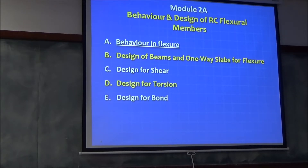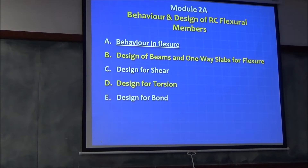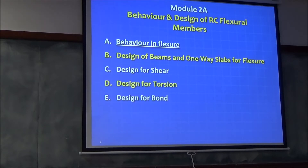Two-way slabs we won't have time to cover, but we'll take a look. Then you have design for shear, design for torsion, design for bond. At the end of the course I would like you to do a simple term project where we take a typical building. I just want you to show me how you will analyze and design one typical slab and a frame — a beam — just to make sure that you apply it in real life.